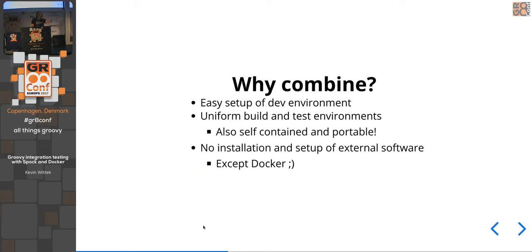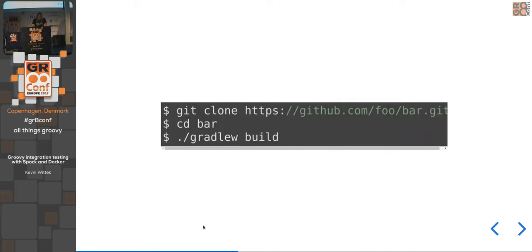So why do we want to combine Spock with Docker? We want an easy setup of a dev and test environment that looks the same on developer machines and on the CI system — self-contained so the project can be built and tested the same way everywhere. Ideally, developers don't need to install any external software like a database. A new developer should be able to check out the project, build it, run integration tests — without any environment setup.